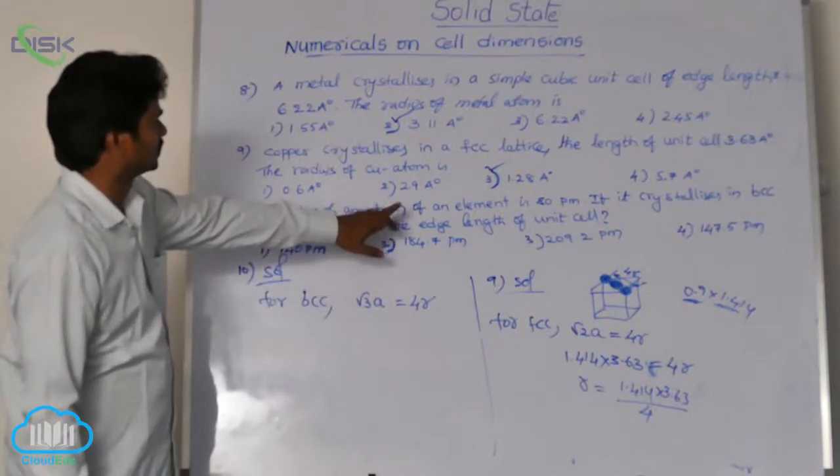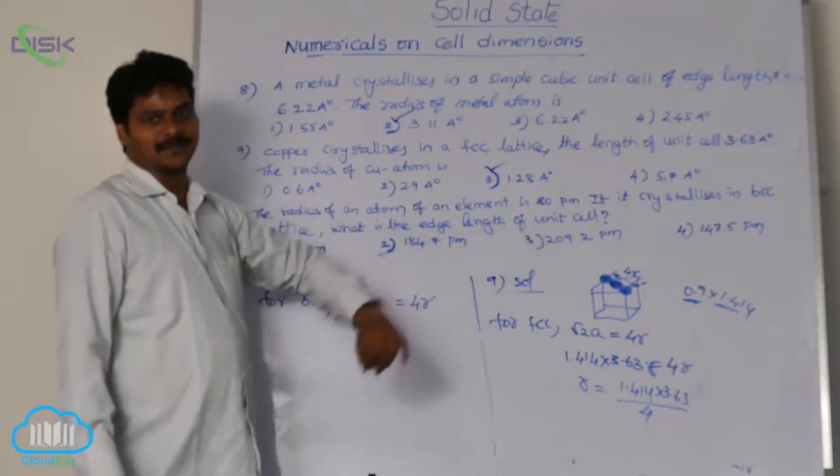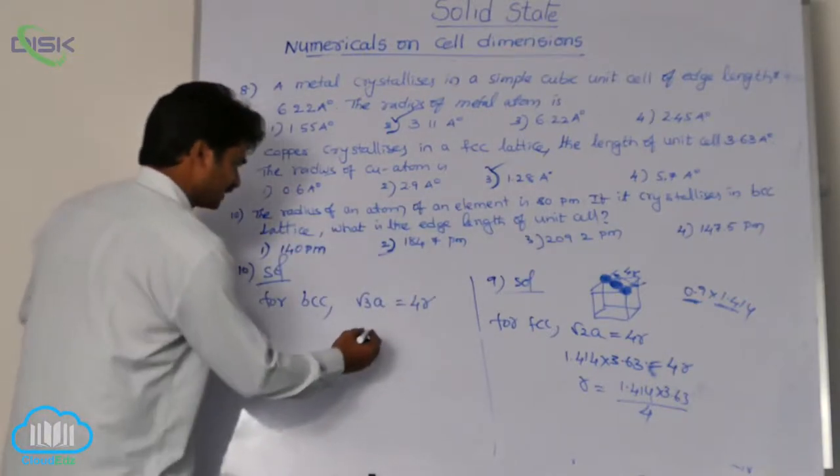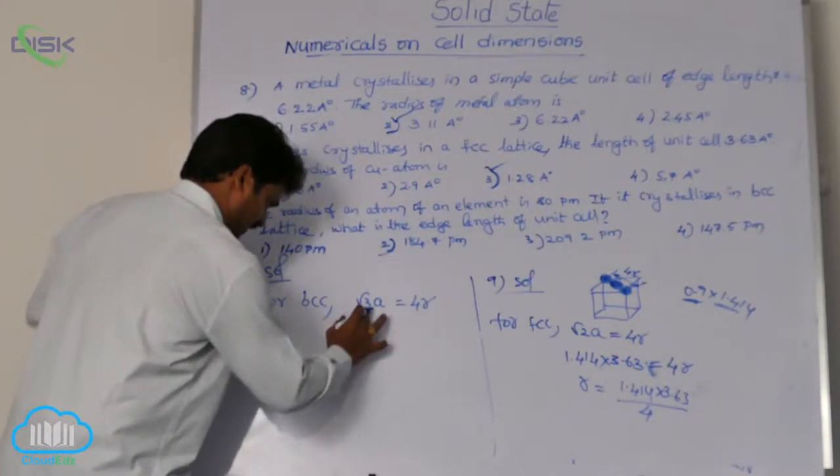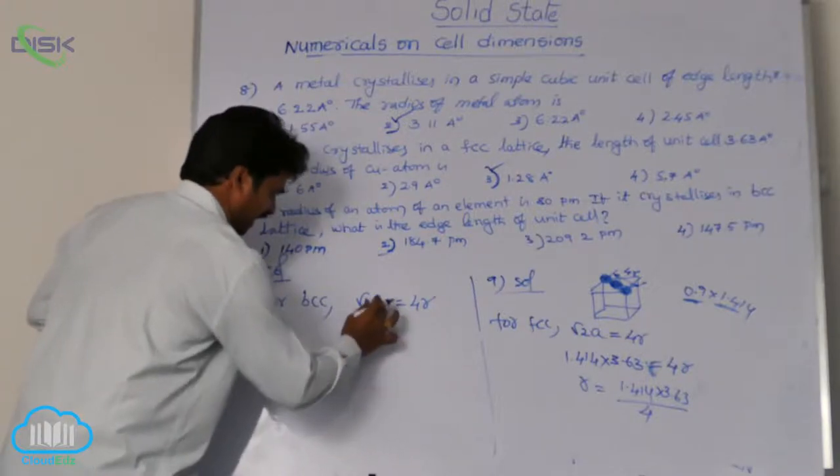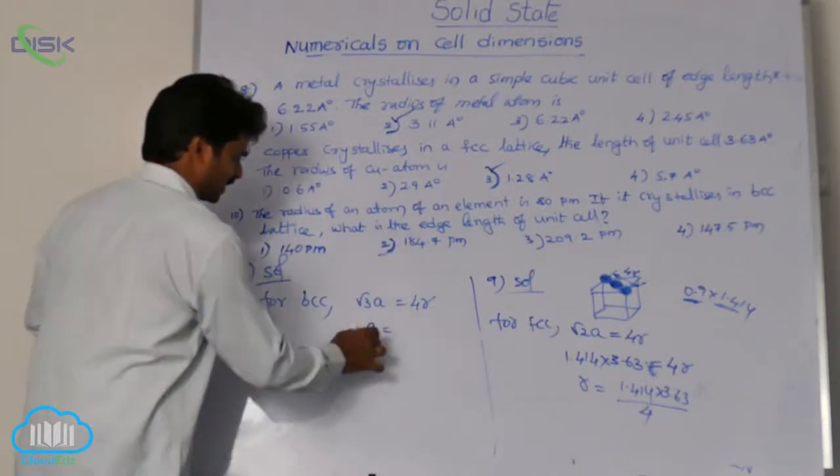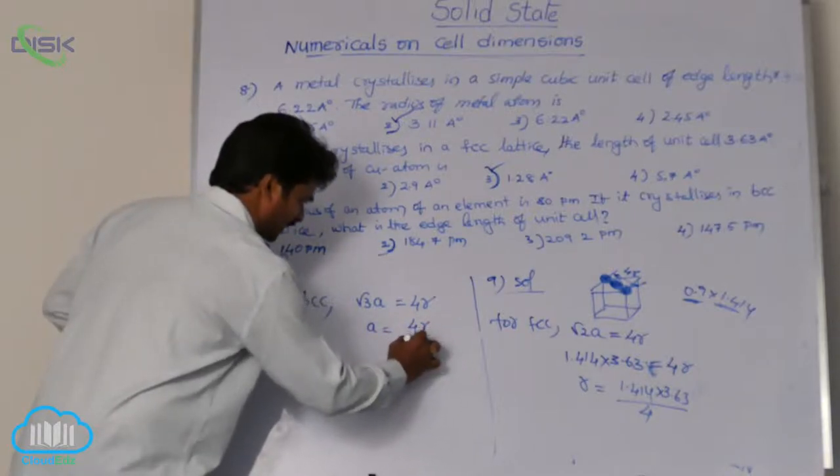So here, which one is given? Radius of the atom is given as 80 picometers. That means, let us write, a is equal to... We're asking for edge length, radius is given. So, a equals 4r by root 3.